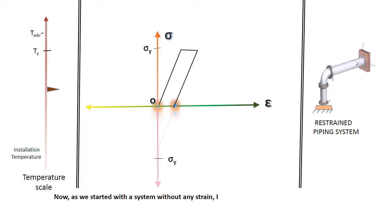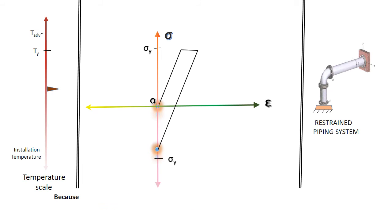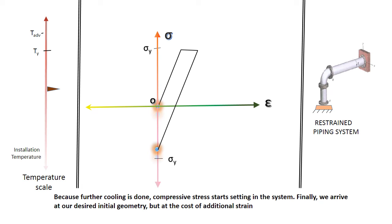Now, as we started with a system without any strain, I want it back so I will allow further cooling and allow the system to shrink in order to give me back the same system with initial dimensions. Because further cooling is done, compressive stress starts setting in the system. Finally, we arrive at a desired initial geometry but at the cost of additional compressive stress set in our system.